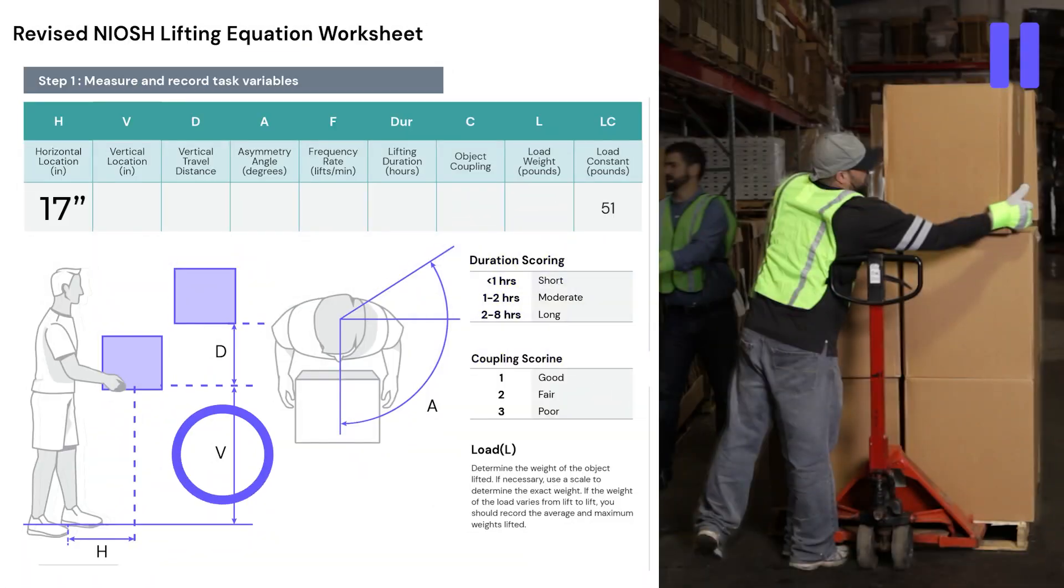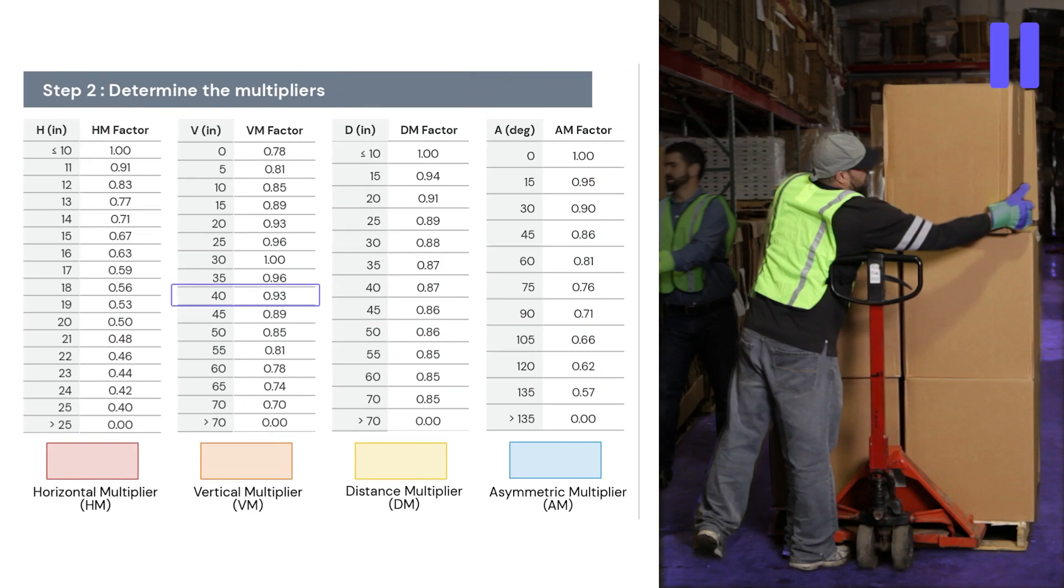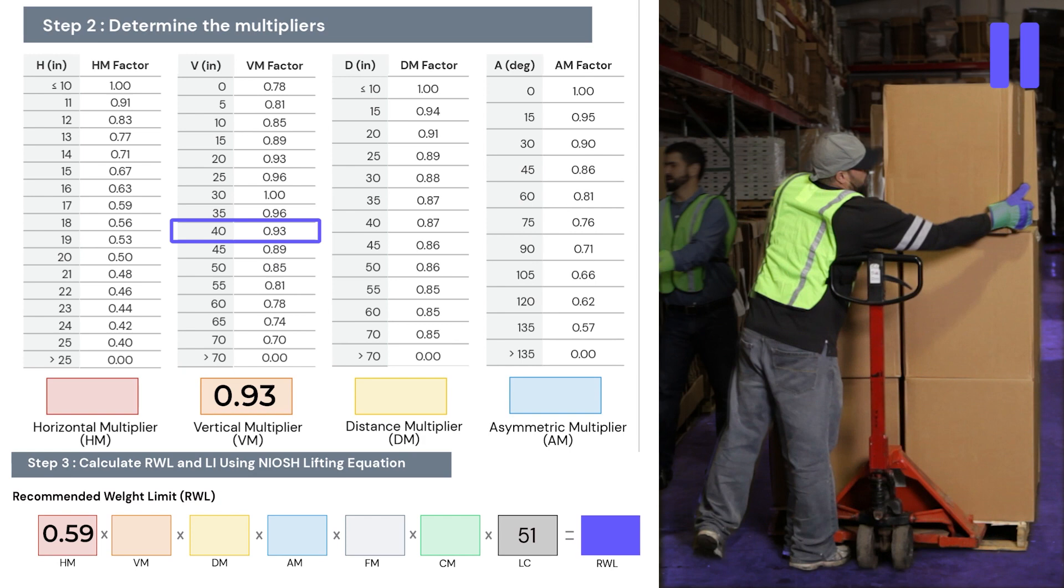Next, let's review risk variable number two. This is the vertical component of our recommended weight limit. The vertical location of our lift is defined by the vertical height between the floor and the midpoint between those two large middle knuckles on both hands. We collected a field measurement for the vertical location too. In this case, the vertical distance was 40 inches. Again, we rely on the three-step process. We plug the 40 inch vertical field measurement into the vertical conversion table. We pluck the vertical multiplier from the conversion table, and we plug the vertical multiplier, in this case 0.93, into the equation.